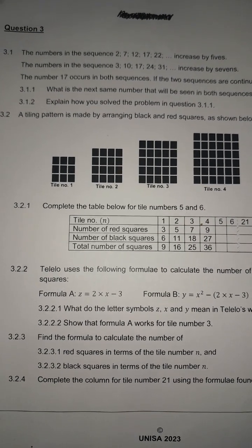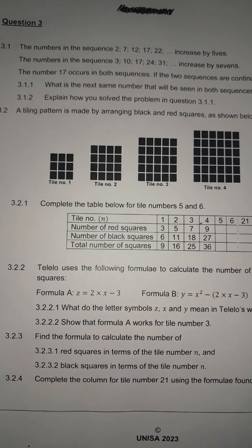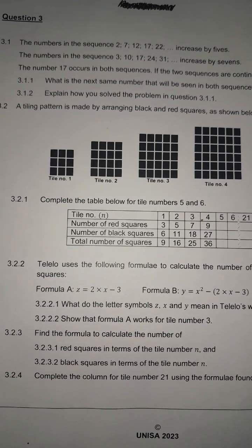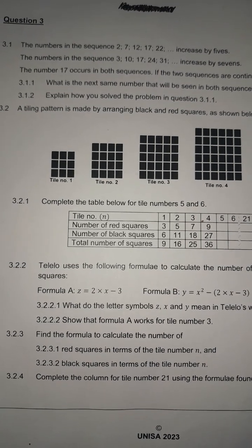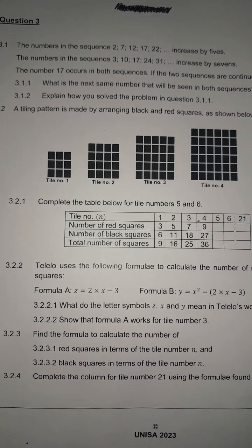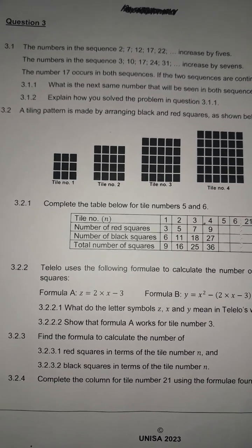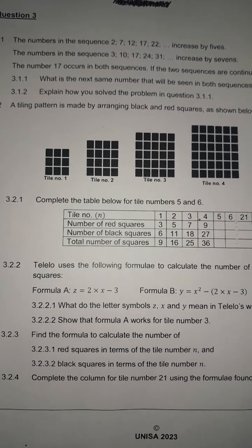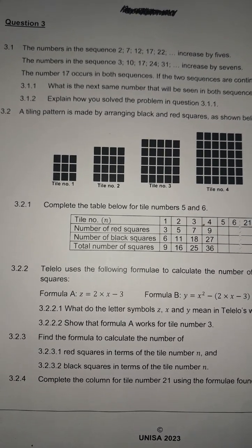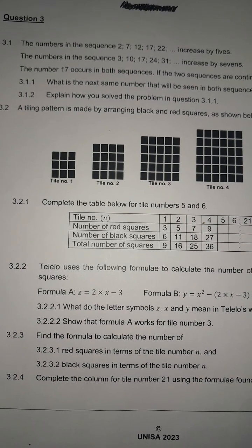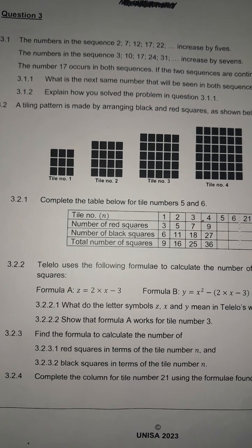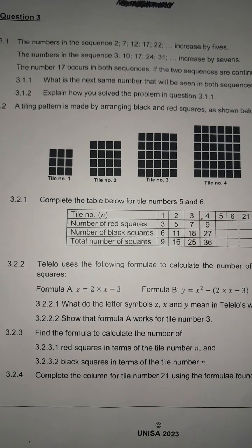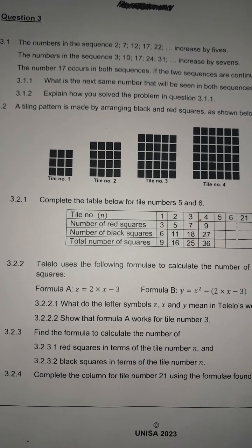The third pattern is a square pattern — for example, one squared is 1, two squared is 4, three squared is 9. The fourth pattern is a cubic pattern — for example, one cubed is 1, two cubed is 8, and so on.